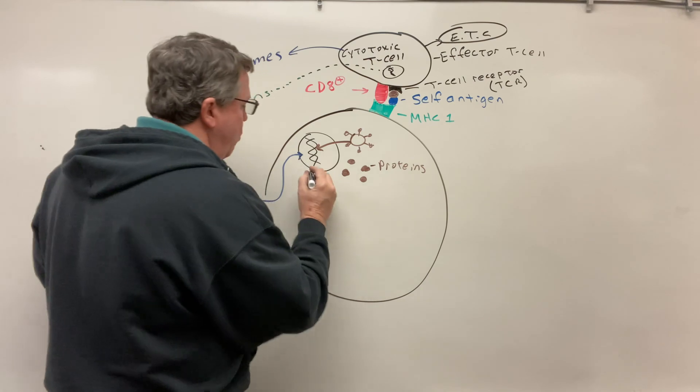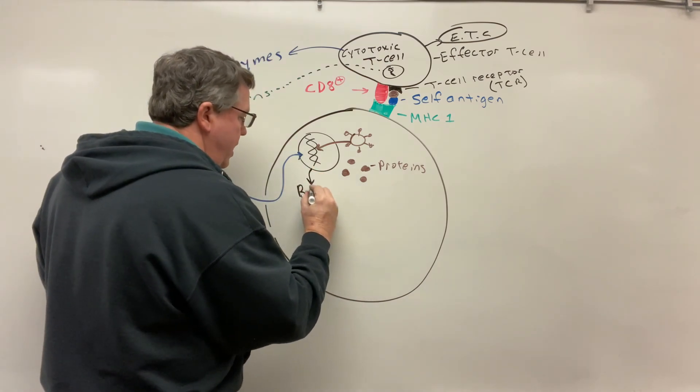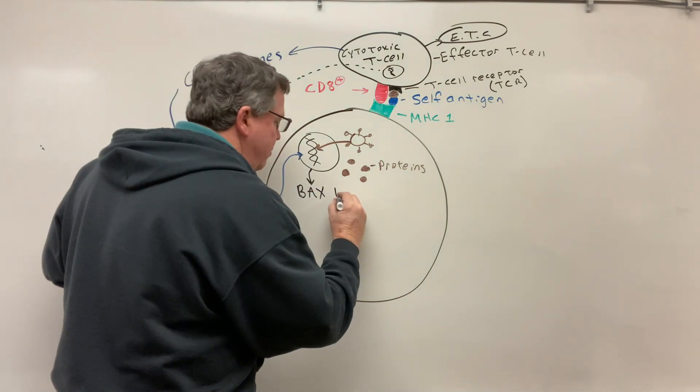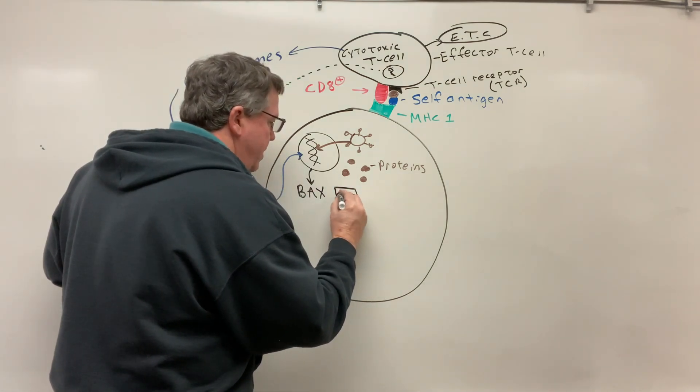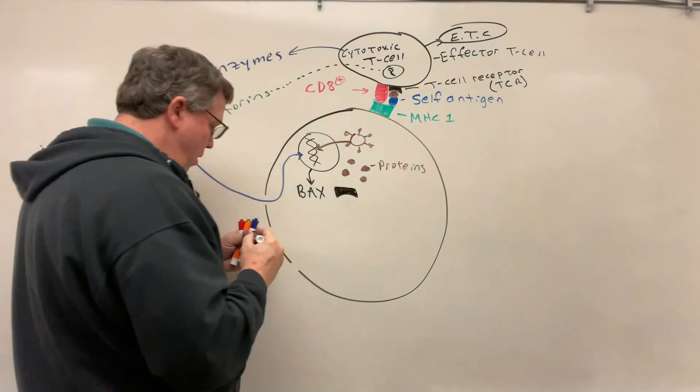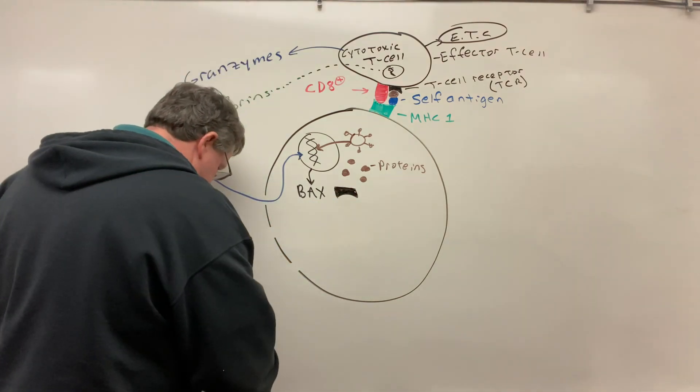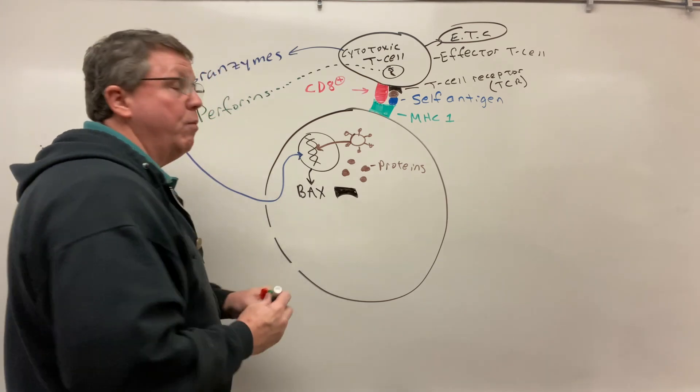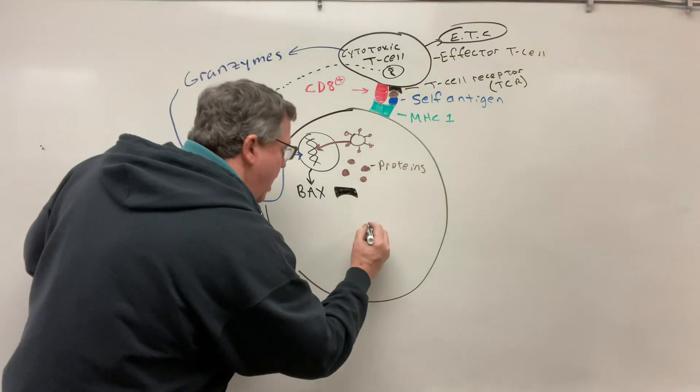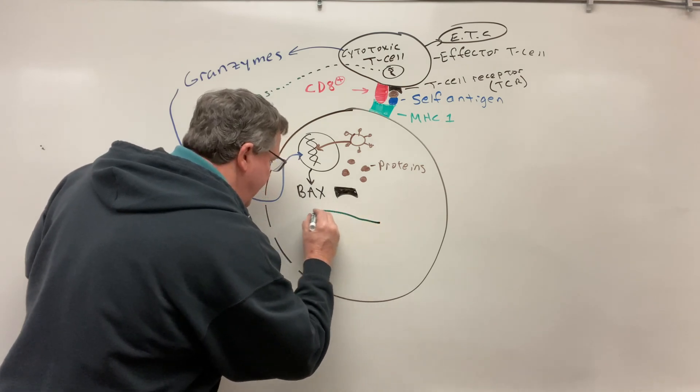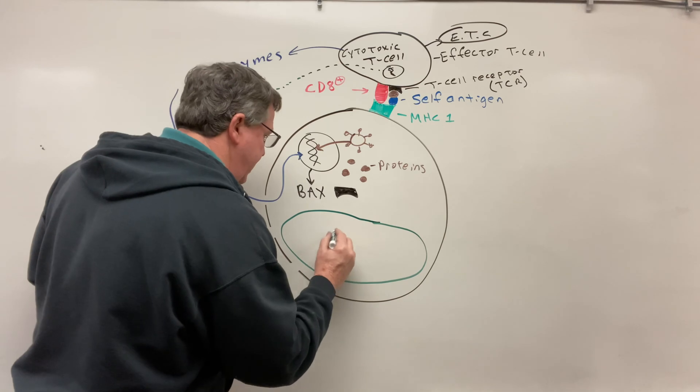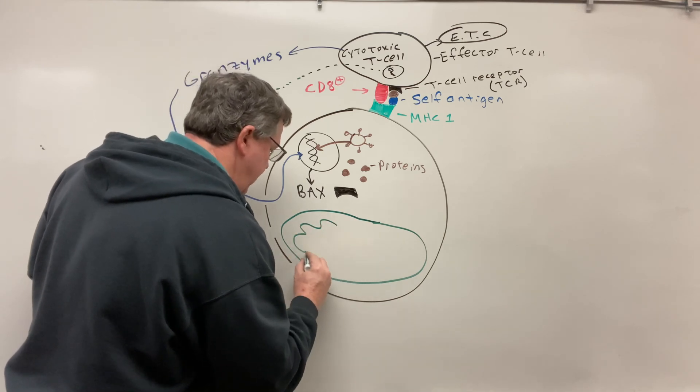So it's going to do this and when it does it's going to produce something called Bax, B-A-X, Bax, and my Bax is going to look something like this. Now also inside the cell, you probably if you remember in high school, you had the powerhouse of the cell which we called mitochondria. I'm going to draw this one really big.